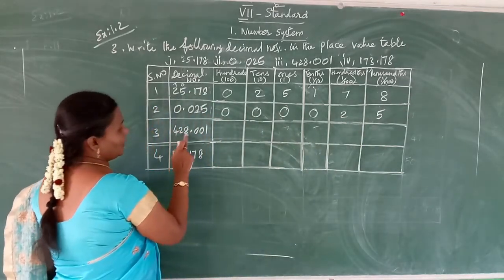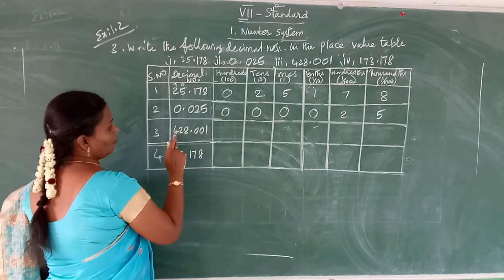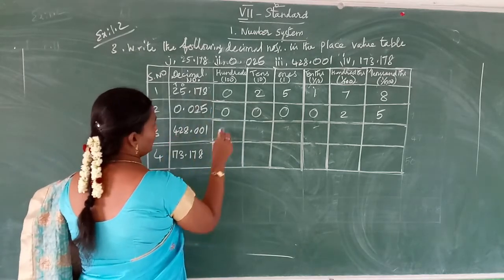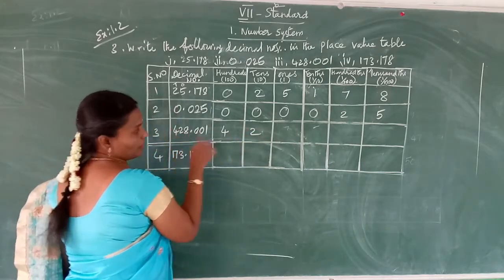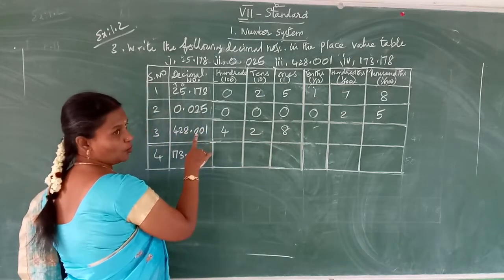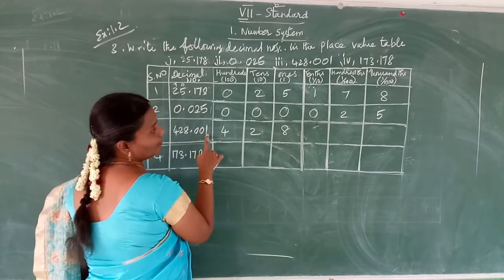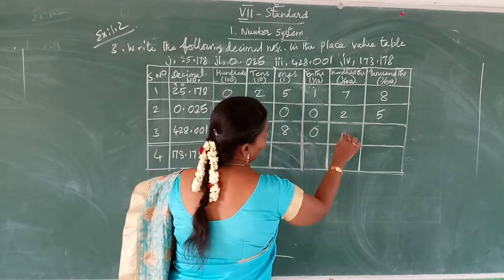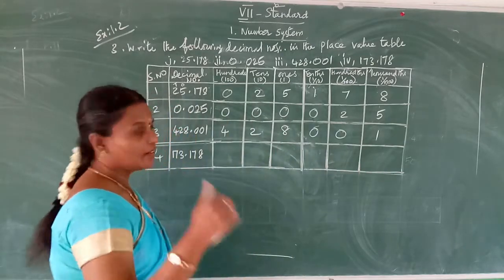See the third number: 428.0001. The whole part is four hundred twenty-eight, so in the hundreds space write four, tens space two, ones space eight. In the decimal part there are no tenths and hundredths — only thousandths — so tenths is zero, hundredths is zero, and thousandths is one.